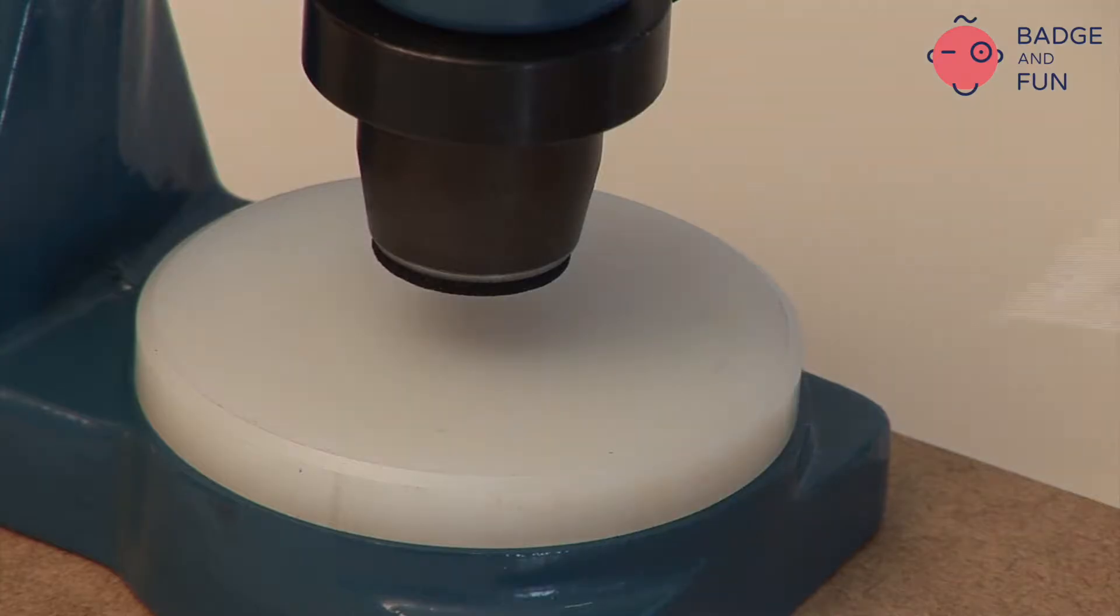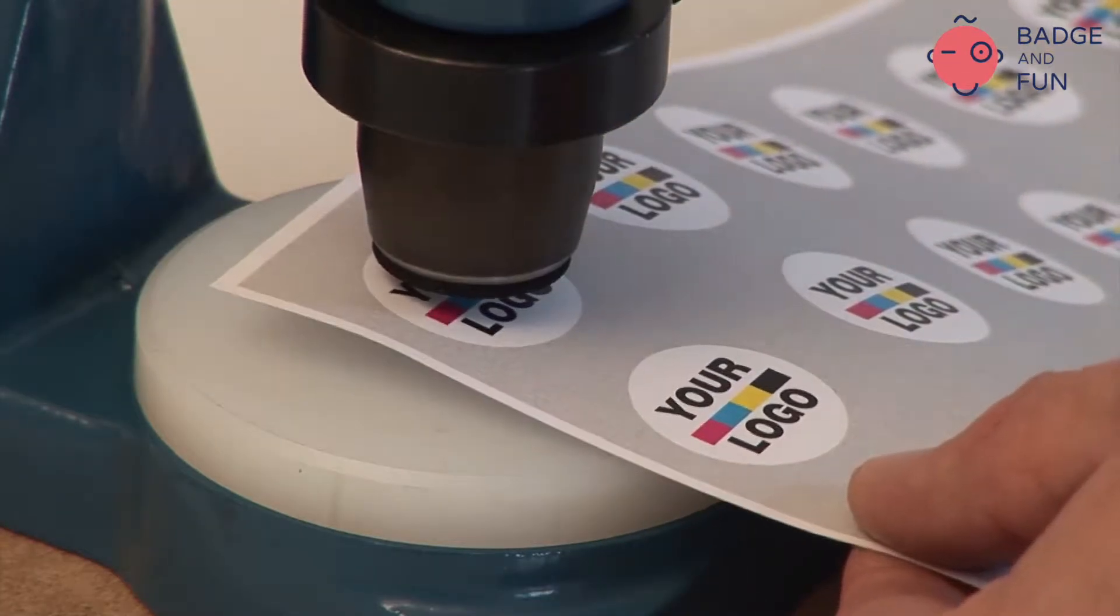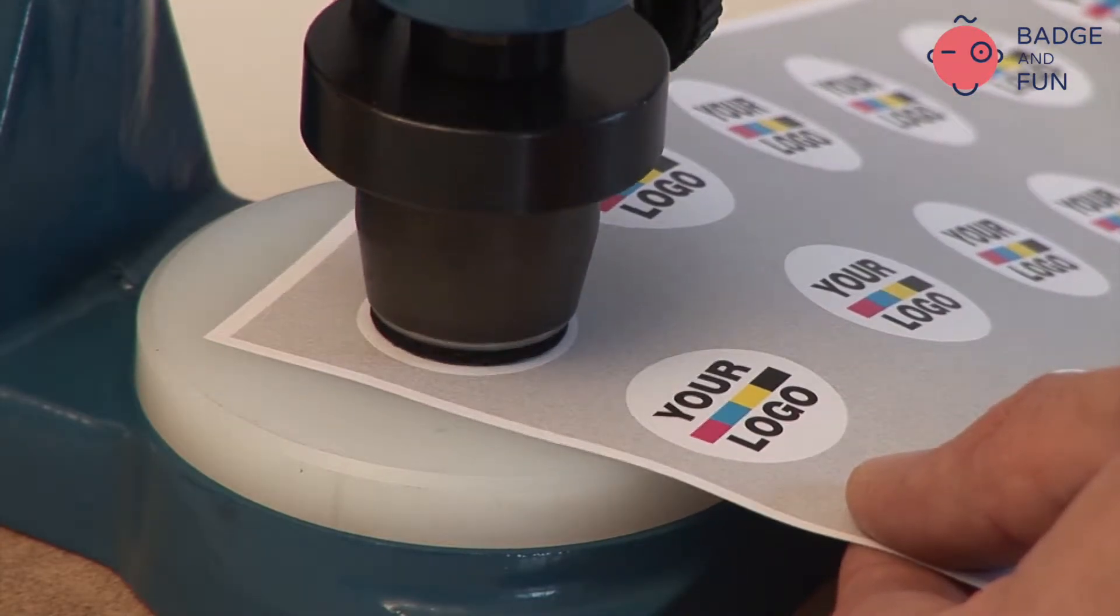Afterwards, place the white nylon circle on the base of the machine. The machine is ready to cut.